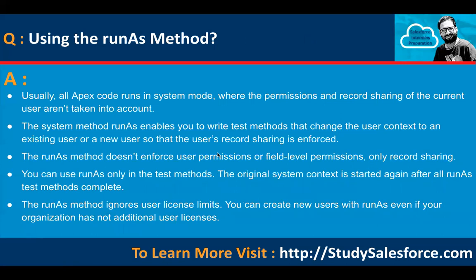Using the runAs method: normally all Apex code runs in system mode where permissions and record sharing of the current user are not taken into account. The System.runAs method enables you to write test methods that change the user context to an existing or new user so that the user's record sharing is enforced. The runAs method doesn't enforce user permissions or field-level permissions, only record sharing. You can use runAs only in test methods. The original system context is restored after all runAs test methods complete. The runAs method ignores user license limits — you can create new users even if your org has no additional user licenses.